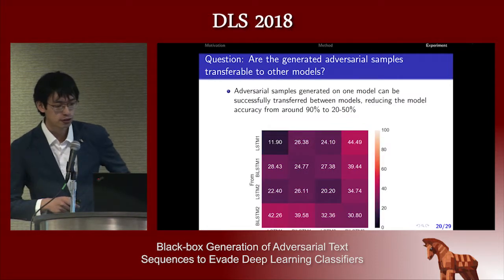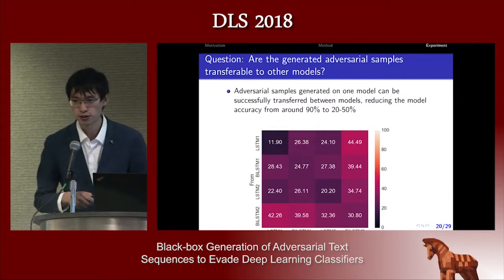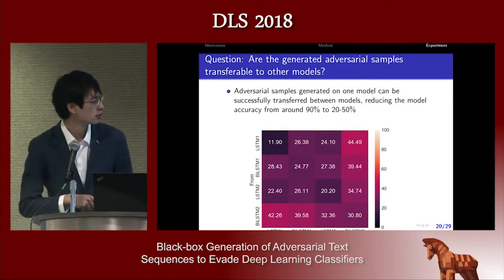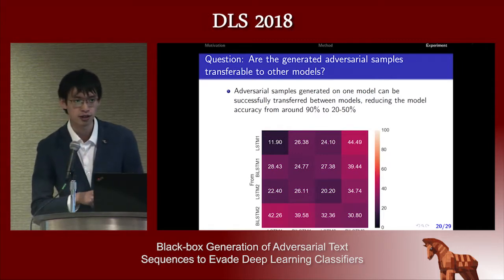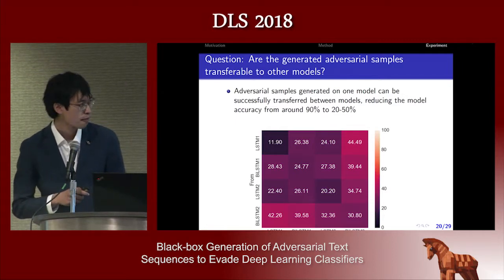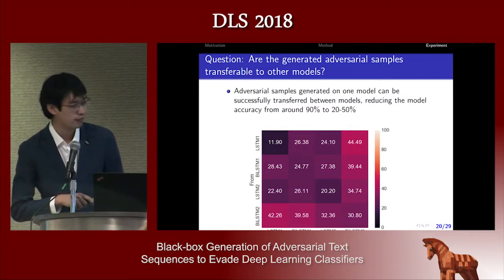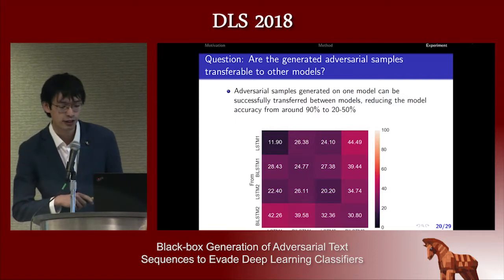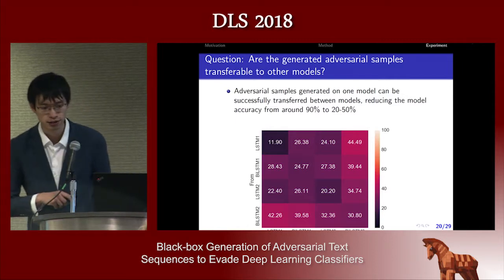We also studied the transferability of adversarial samples — whether a sample generated on one model can also attack another model. We trained four different LSTM models: two bidirectional and two not, two trained using random embedding and two using pre-trained embedding. Using these different word embeddings, our method is still able to reduce accuracy from 90 percent to around 20 to 50 percent.